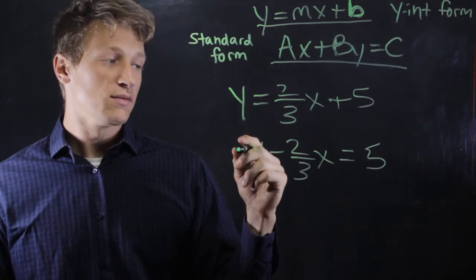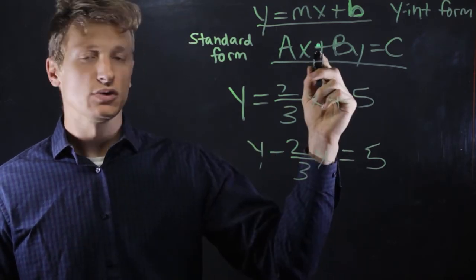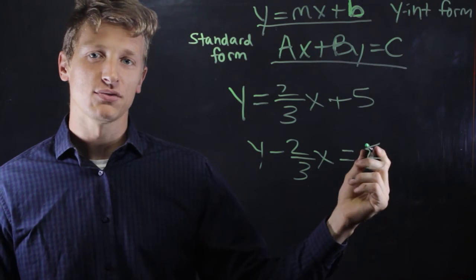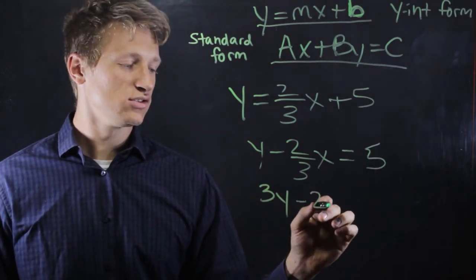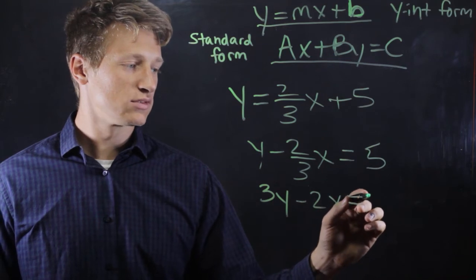Then, to get rid of the fractions, which is required for standard form, we multiply through by 3. So 3y minus 2x equals 15.